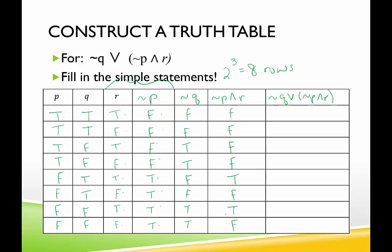Finally, for the complete statement not q or (not p and r), we look at those two columns — a disjunction. False or false is false; false or false is false; true or false is true; true or false is true; false or true is true; false or false is false; true or true is true; true or false is true. That completes this three-statement truth table.